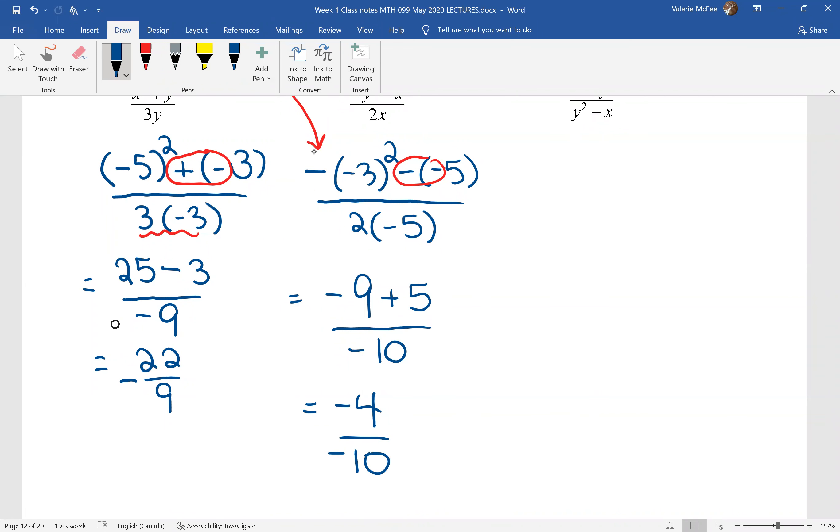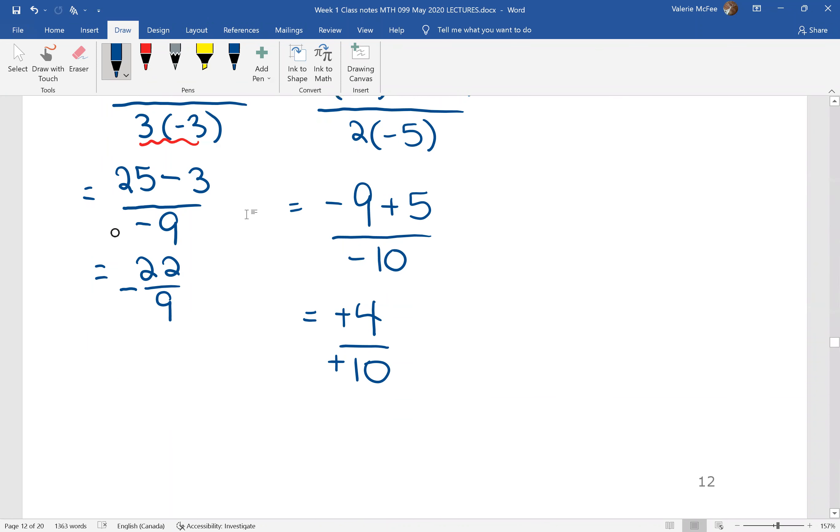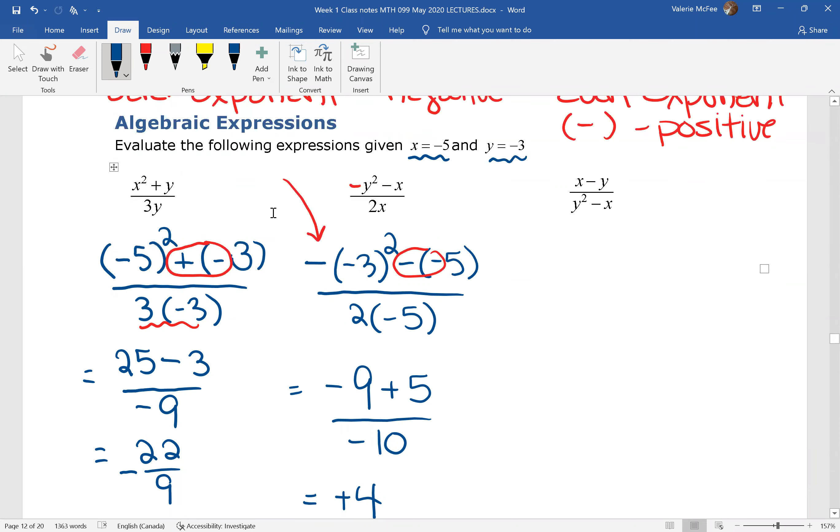Remember, when we have a negative divided by a negative, an even number of negative signs, it becomes positive. And, of course, we can simplify this fraction. Divide the numerator and the denominator by 2. Pause your video and try this one.